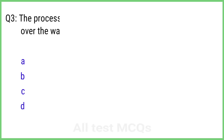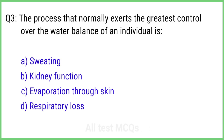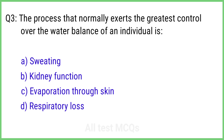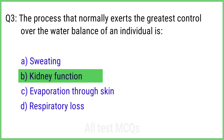Question 3. The process that normally results in the greatest control over the water balance of an individual is? The right answer is option B: Kidney function.